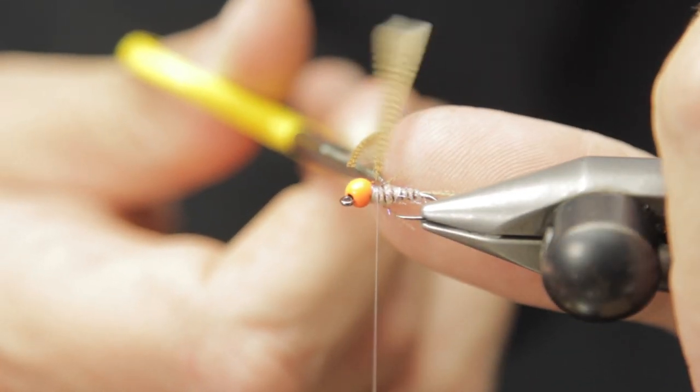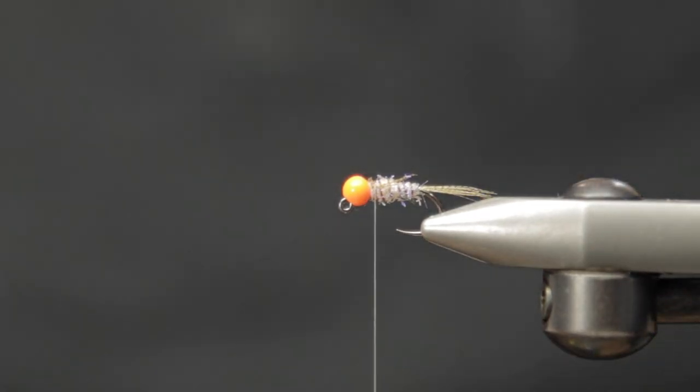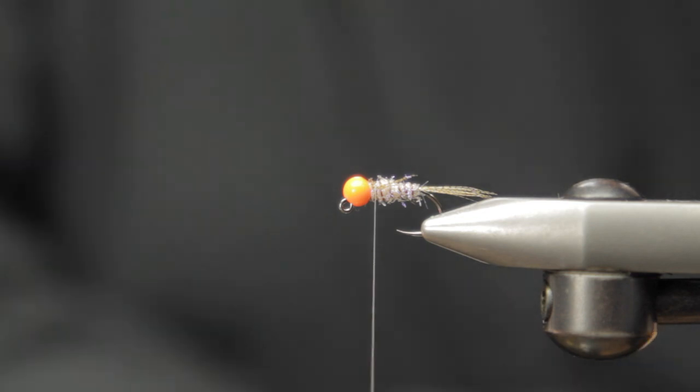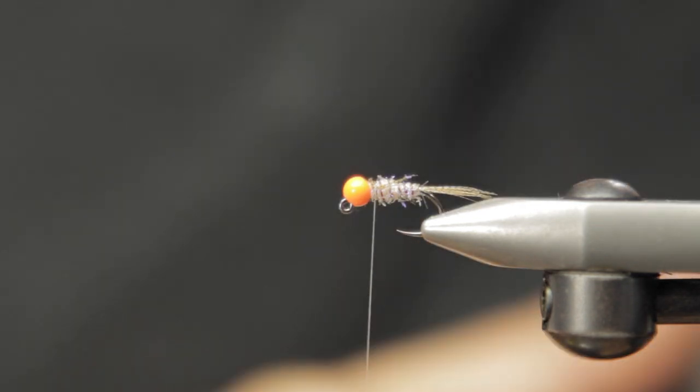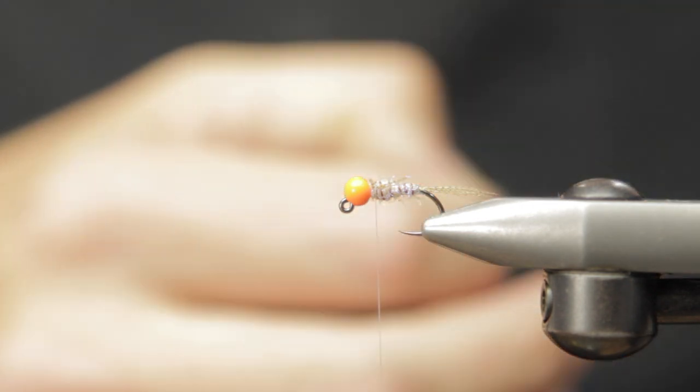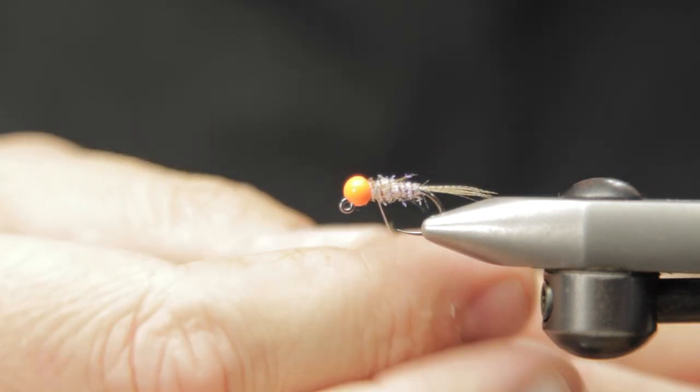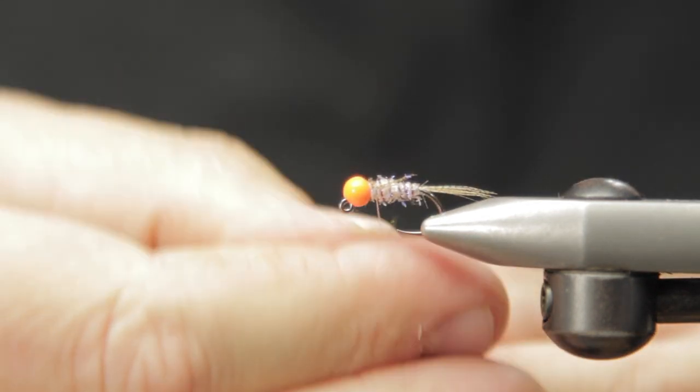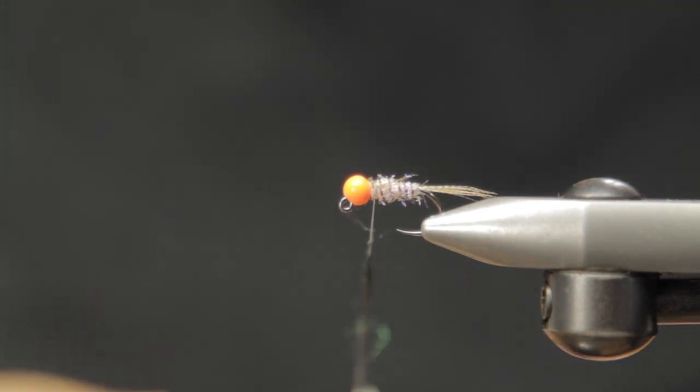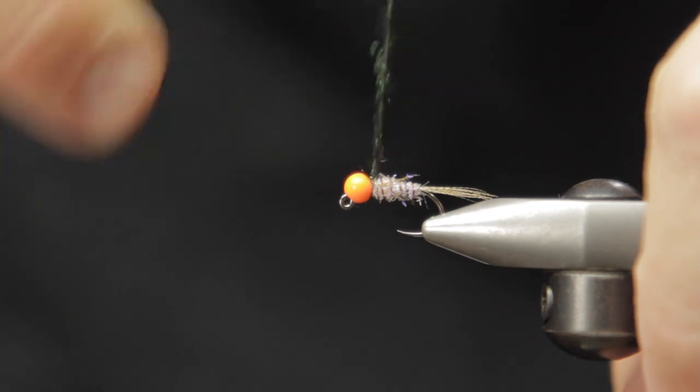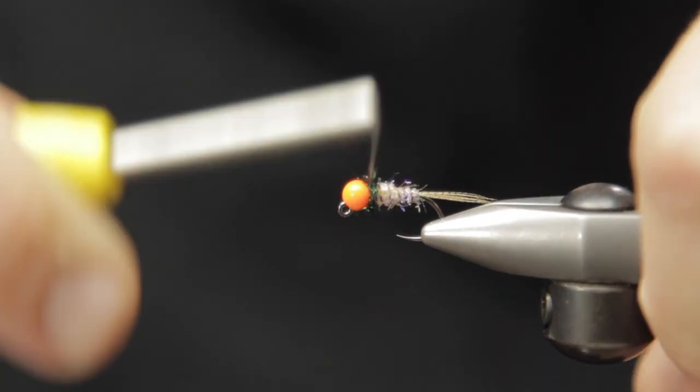I'm going to use some Ice Dub Peacock Black just to make a darker thorax section, and again, you can change this up to be any colorway you want. You could use more of the tan. Realistically, like I said, sky's the limit here. The Bird's Nest is one of the best patterns probably ever created. It's very suggestive and catches just a ton of fish.